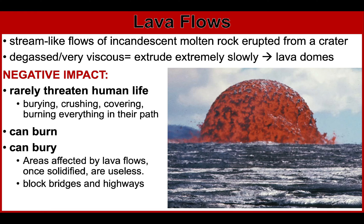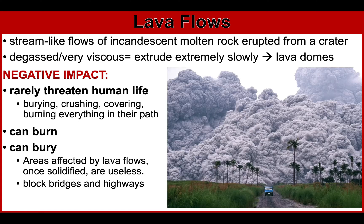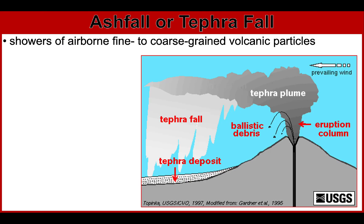Collapsing viscous lava domes can trigger dangerous pyroclastic flows. A pyroclastic flow is a dense, fast-moving flow of solidified lava pieces, volcanic ash, and hot gases, as you can see in this picture. The next volcanic hazard is ashfall or tephrafall. Ashfall or tephrafall are showers of airborne, fine-to-coarse-grained volcanic particles that fall out from the plumes of a volcanic eruption.